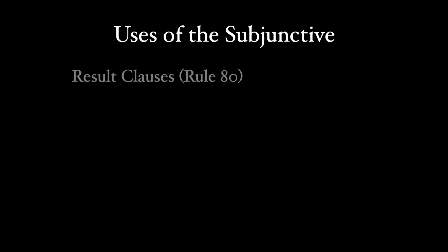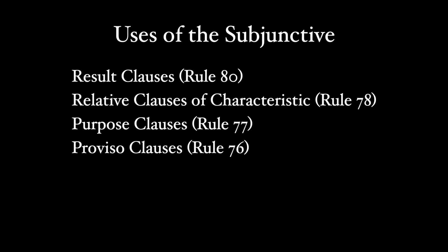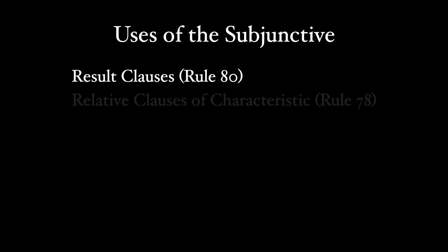The last several rules we've been dealing with the subjunctive: result clauses, relative clauses of characteristics, purpose, and proviso clauses. These all take a verb in the subjunctive mood without question, but we're going to start talking about clauses that can take the indicative or subjunctive mood, depending on the meaning of the clause.